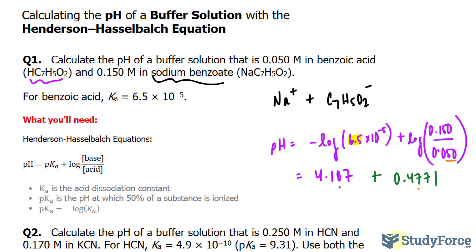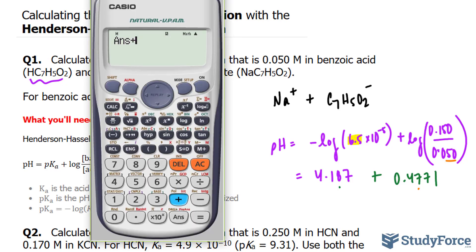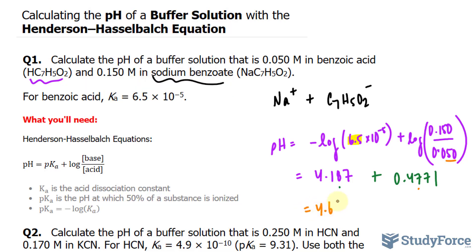Now, when we add these up, we should have a number with two numbers after the decimal place. So the number on our screen plus 4.187, and we get 4.66. 4.66 is the pH of this buffer solution.